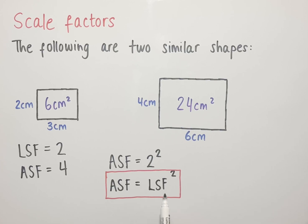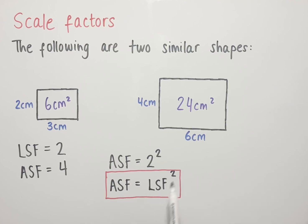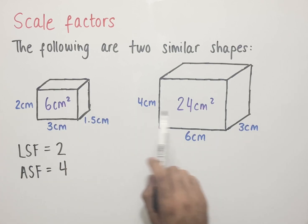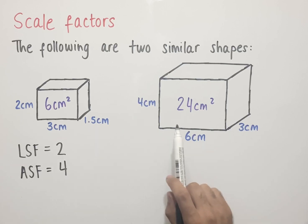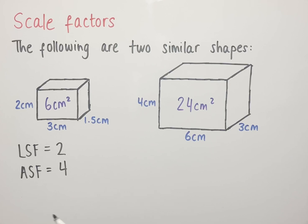This fact is true for any two shapes that are similar — it could have been circles, squares, or 3D shapes — and the area scale factor would always equal the length scale factor squared. We now have two cuboids, and we've got the length, height, and width of each. We're going to compare the volumes to see what relationship, if any, there is with the area scale factor and the length scale factor.